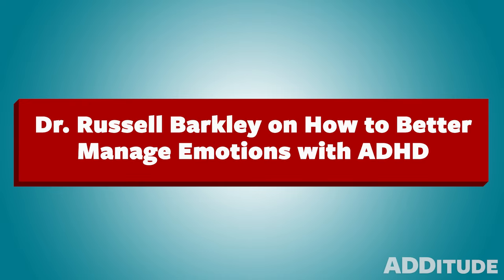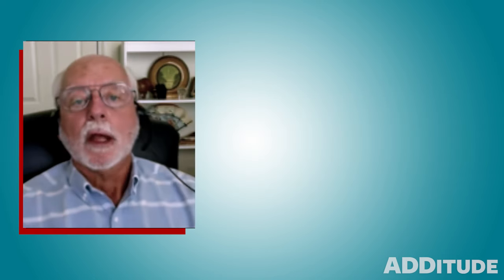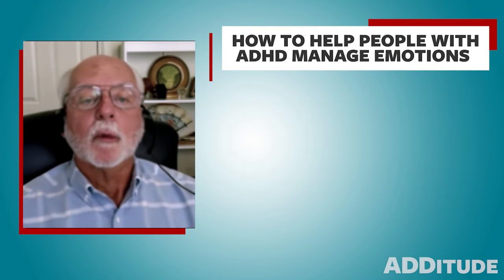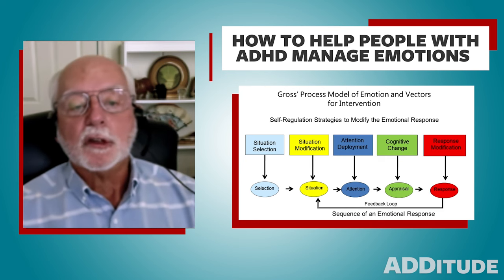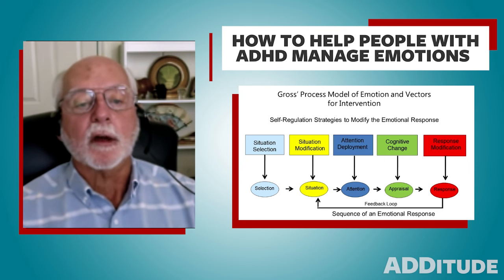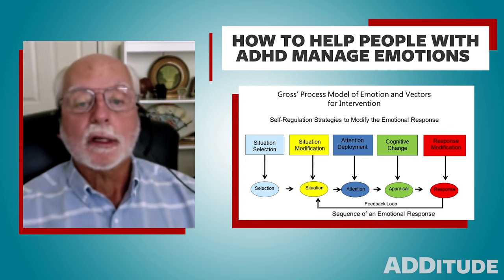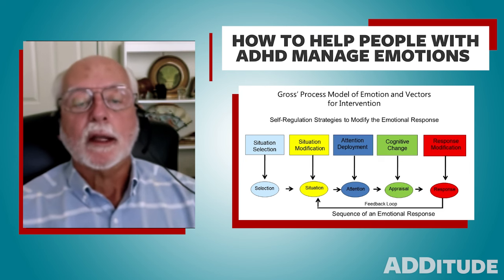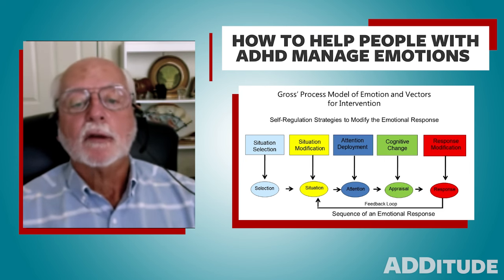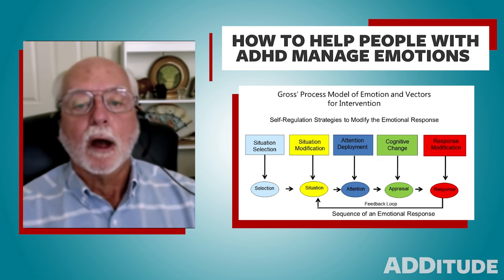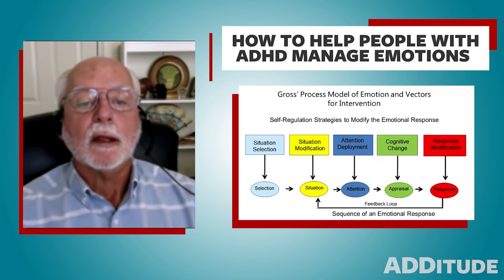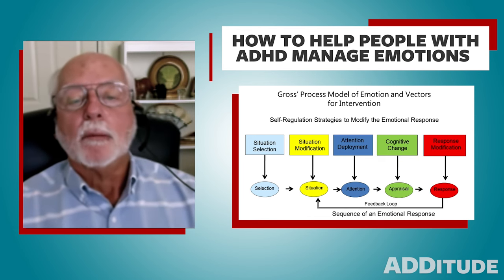Lastly, just a couple of suggestions for how one might further go about helping people with ADHD with emotion problems. We're going to use Gross' model of emotion — it's the most popular in psychology. There's a situation that arises; we select ourselves in and out of situations through our behavior. Something happens that is emotionally provocative, we attend to that provocation, quickly appraise it as threat or not, and then we react with an emotion. This all happens very quickly — within hundreds of milliseconds. But by breaking it apart this way, we can see how we might help with managing emotion.